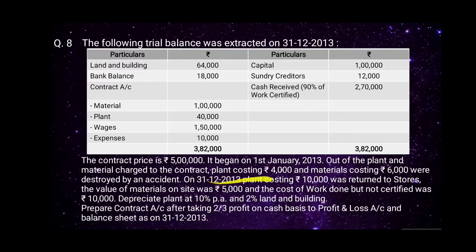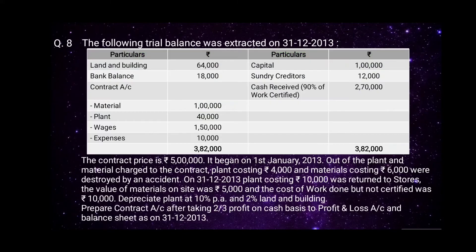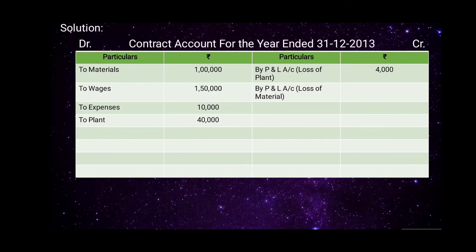Plant costing rupees 4,000 was destroyed by an accident, so we record this on the credit side of the contract account as 'By Profit and Loss Account — Loss on Plant', amount rupees 4,000. Material costing rupees 6,000 was also destroyed by an accident, so we record it on the credit side as 'By Profit and Loss Account — Loss on Materials', amount rupees 6,000.